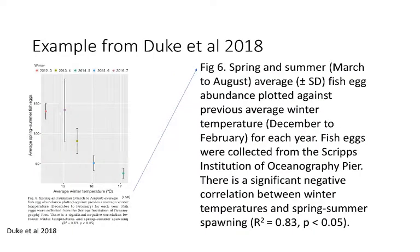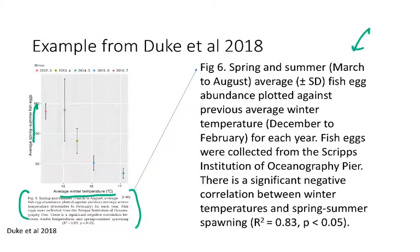For the last example in this video, I'm going to go back to some fish egg data. Here we have an example from Duke et al. 2018 — you were already looking at an excerpt from this paper and this actual graph for some of the homework and one of the online quizzes you did just previously to this video. Here we have the average spring-summer fish eggs on the y-axis and average winter temperature on the x-axis. The figure caption is down here — I've blown it up on the right. Take a minute, read through the figure caption, and try to identify where each of those five components we just talked about are located. Go ahead and pause the video and identify those five different components on your own.